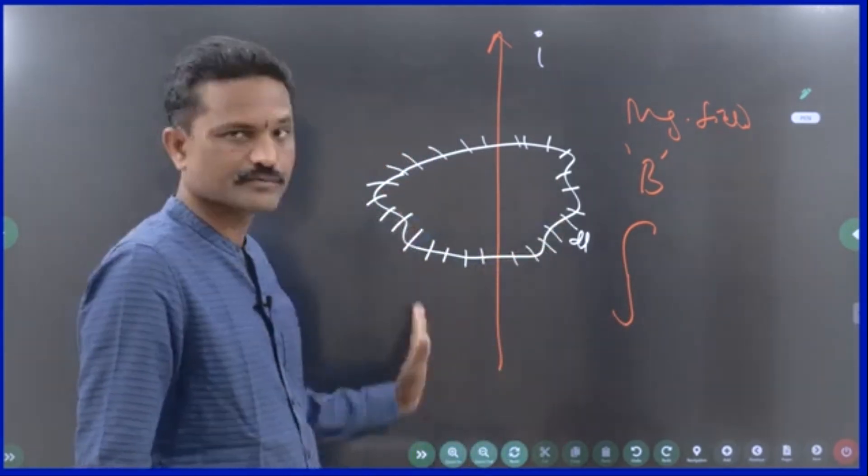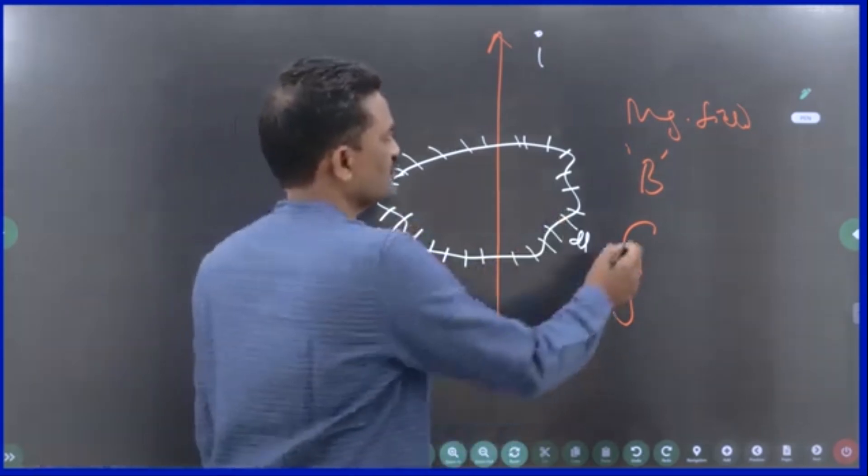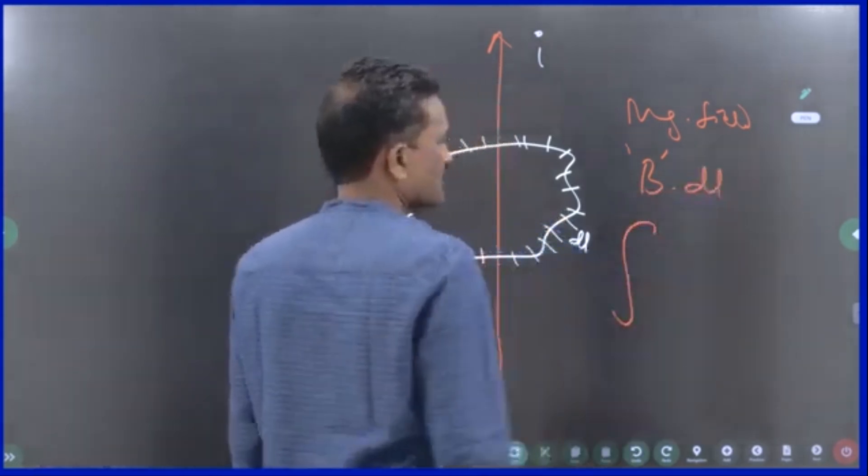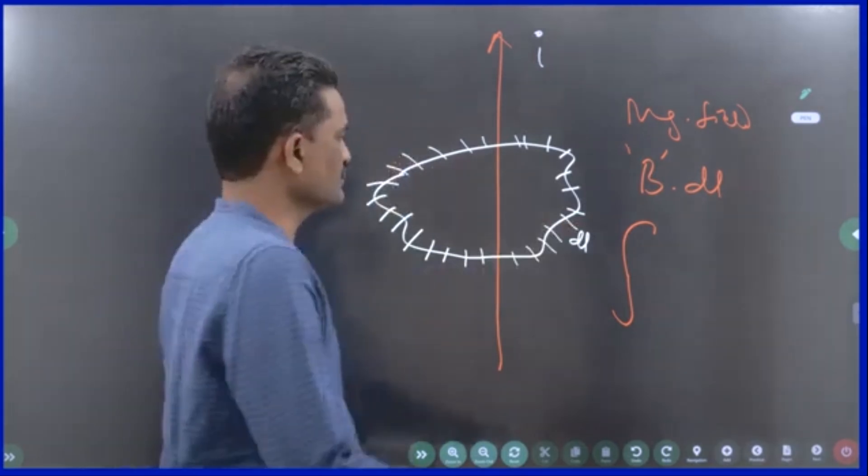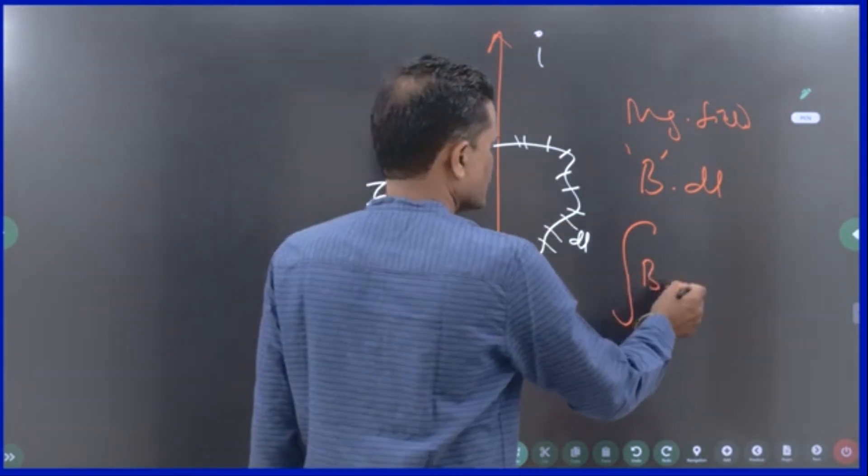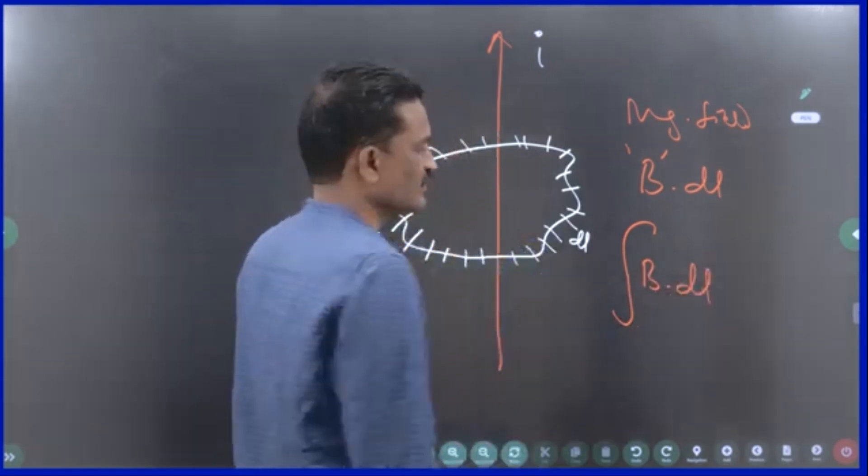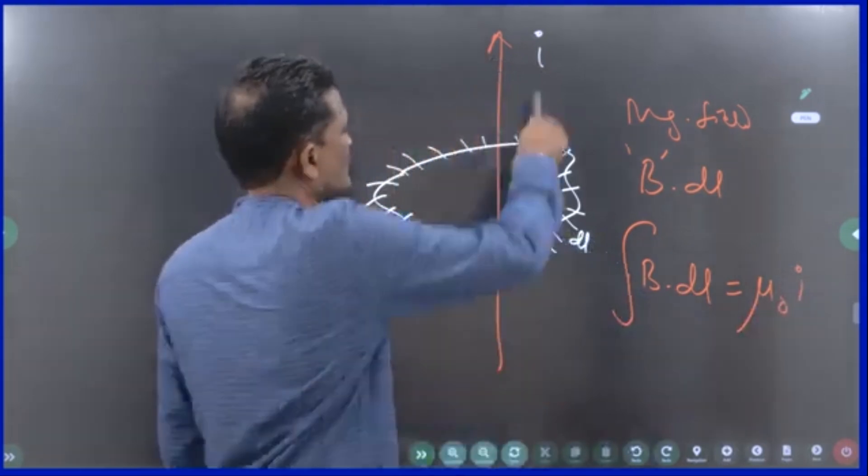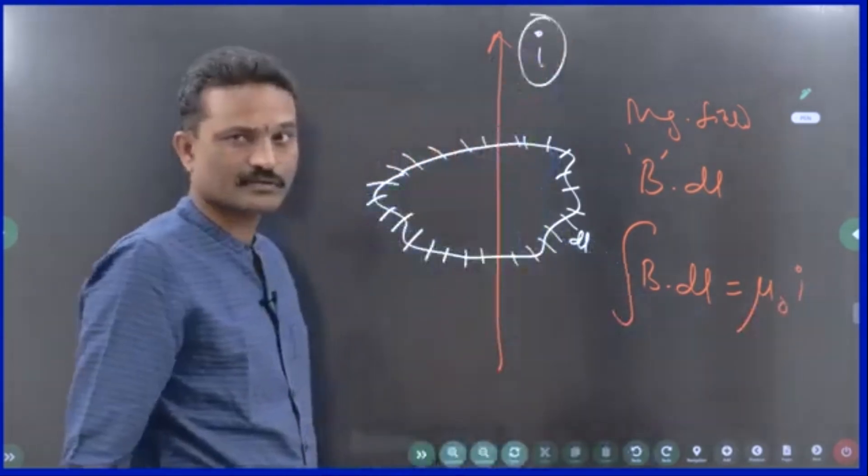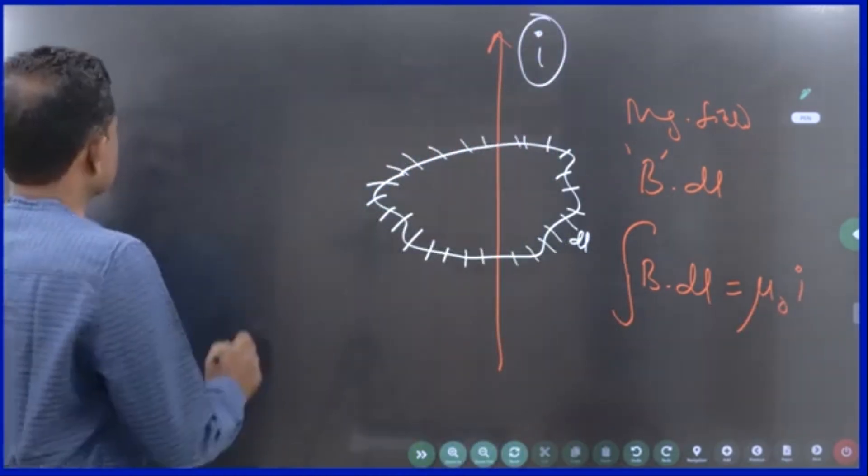I am adding all such pieces. Each piece is b dot dl. I am adding all those terms. Adding means integration. This b dot dl is numerically equal to mu naught times the current, current that is passing through the wire. How do you write the answer?